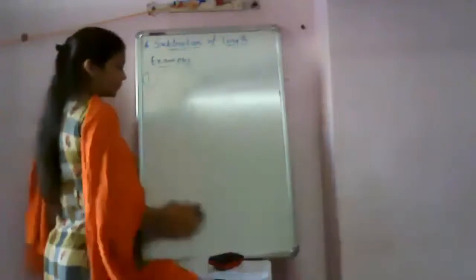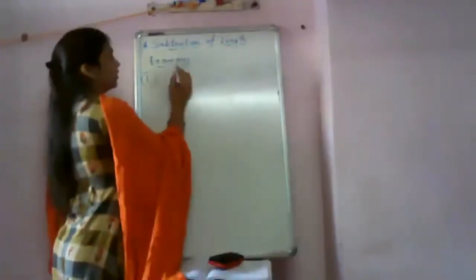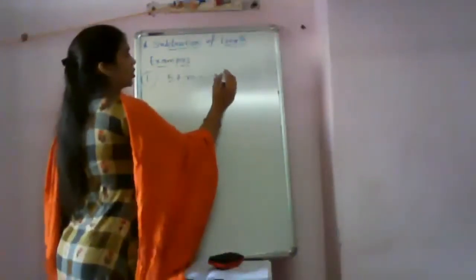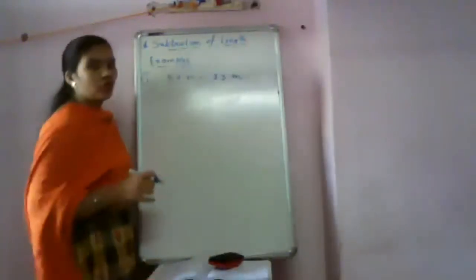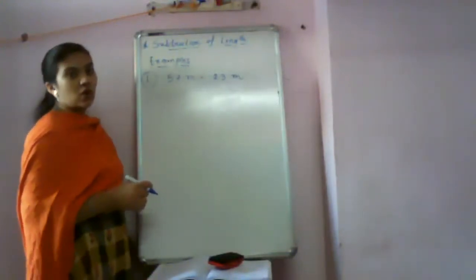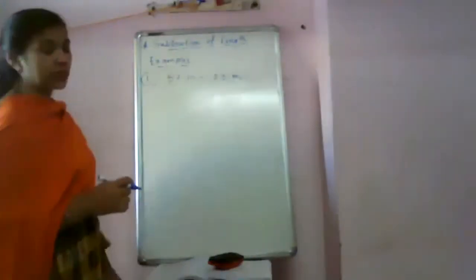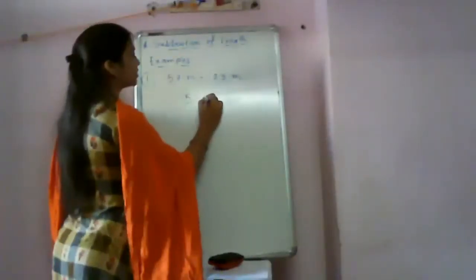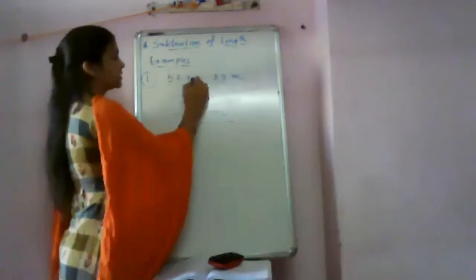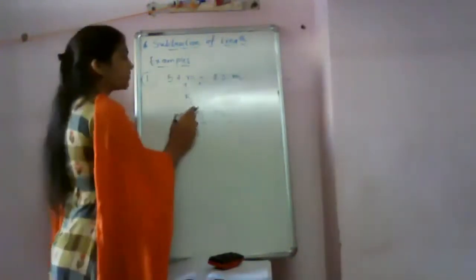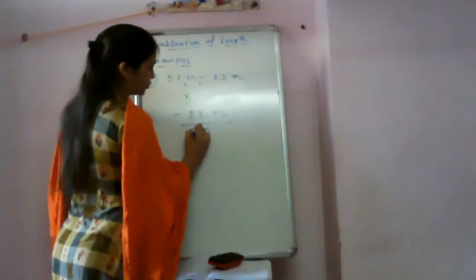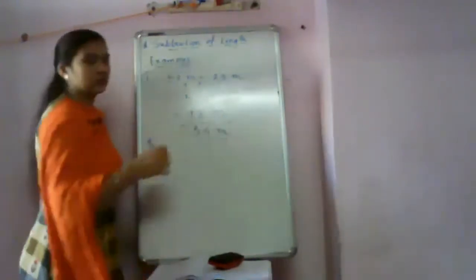First example: 57 meters minus 23 meters. For subtraction, you have to arrange them vertically. So 57 meters minus 23 meters. Start from the ones place: 7 minus 3 equals 4. Then the tens place: 5 minus 2 equals 3. The answer is 34 meters. This is your answer.